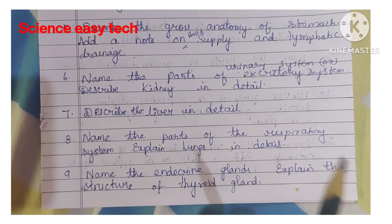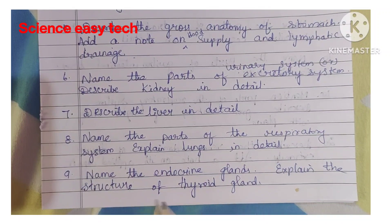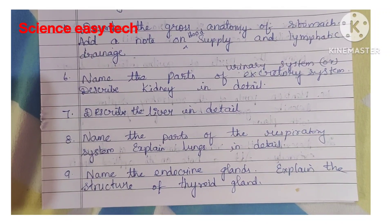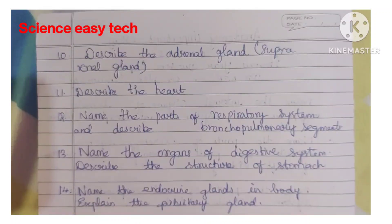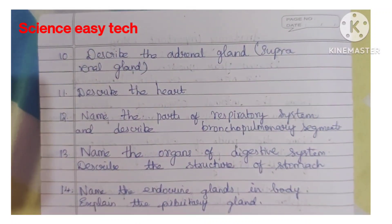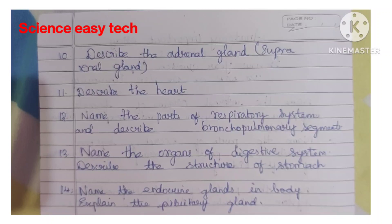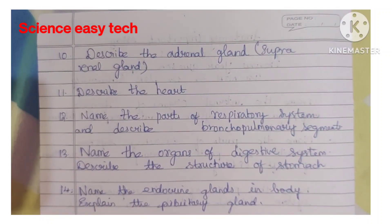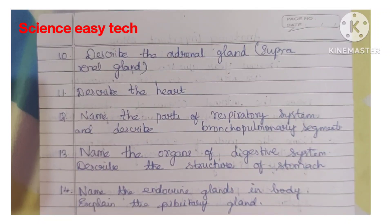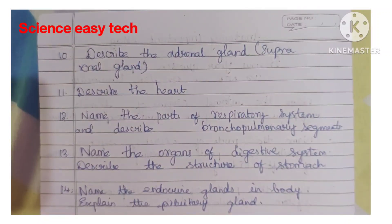Ninth question, name the endocrine glands and explain the structure of the thyroid gland. We have posted many question paper related videos for BSc nursing students and post basic BSc nursing students, as well as nursing research and statistics, with detailed explanation on each topic. You can watch our channel playlist for all these videos.